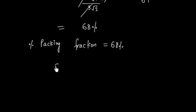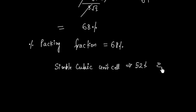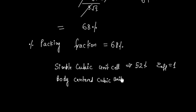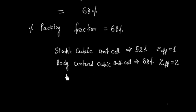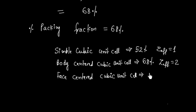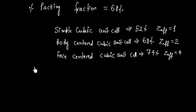For comparison: in a simple cubic unit cell, the packing fraction is around 52% and the effective number of atoms is 1. In BCC cubic, the percentage packing fraction is 68% and the effective number of atoms is 2. In face centered cubic (FCC), the packing fraction is 74% and the effective number of atoms (Z effective) is 4. As the effective number of atoms inside a unit cell increases, the percentage packing fraction increases.